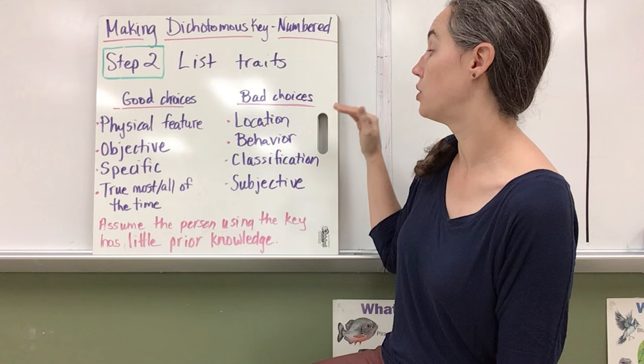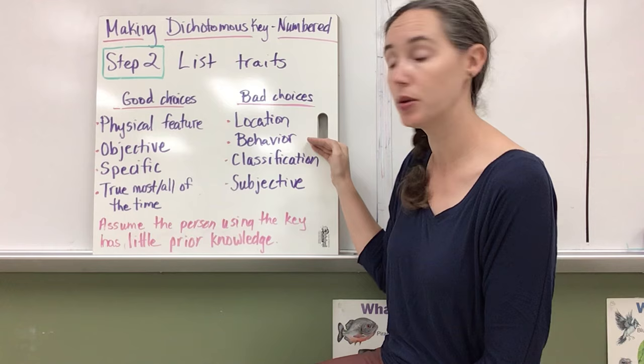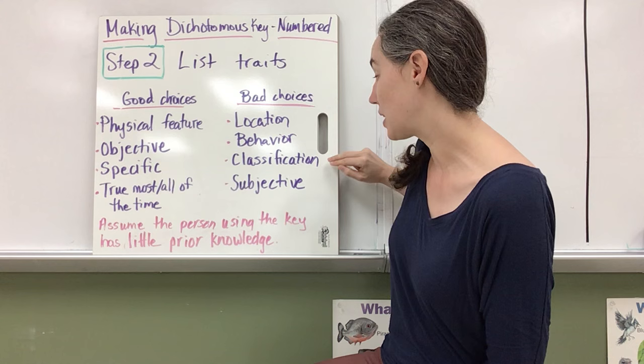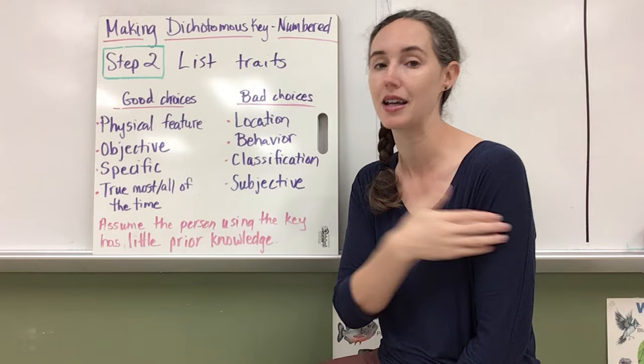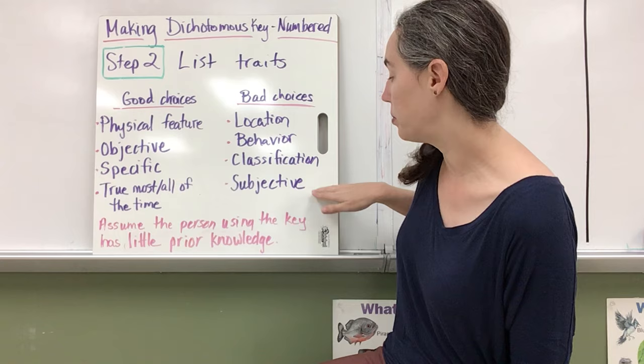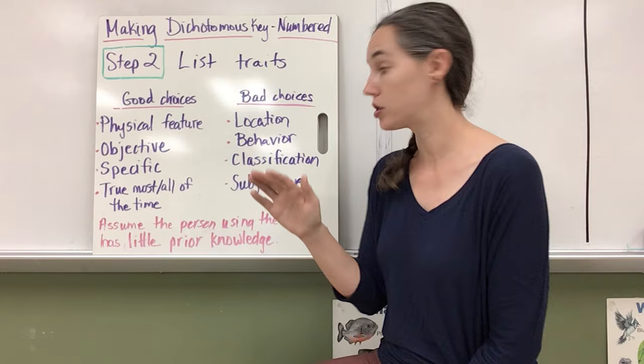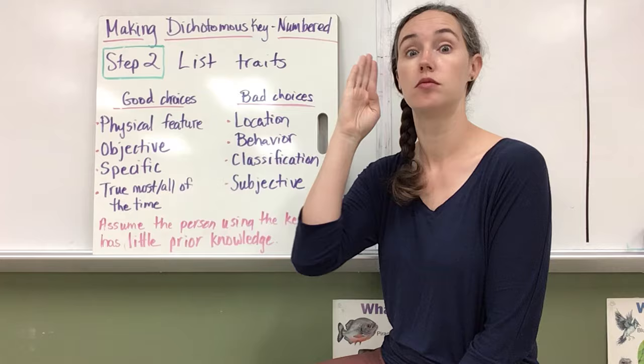Bad choices include their location. If you're describing a behavior, because that organism may not be showing that behavior at the time. A classification, because classification is just a grouping based on a set of known traits. But if the observer doesn't already know those traits, they can't use a classification to help them separate in the key. And it can't be subjective. So you can't use things like pretty or ugly or gross. It needs to be something objective that's true. Red, spiky, that kind of thing.